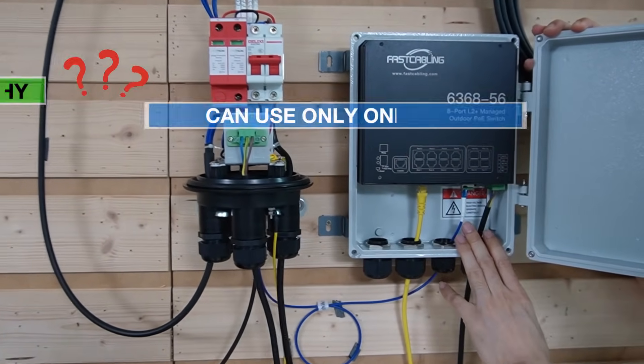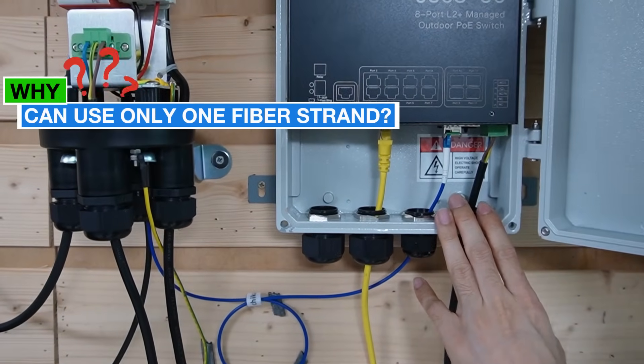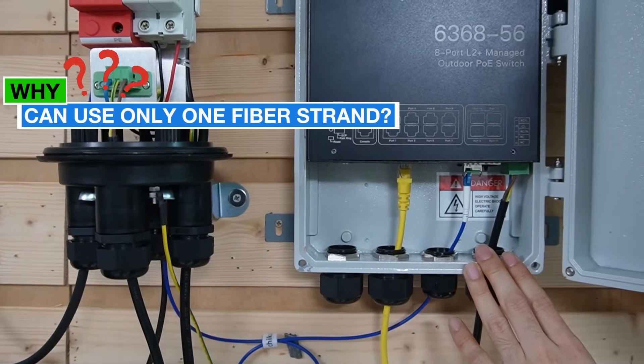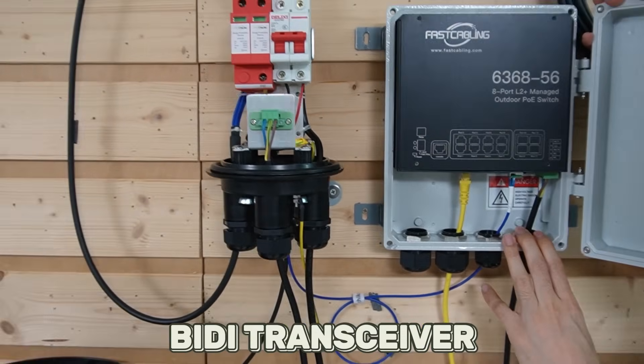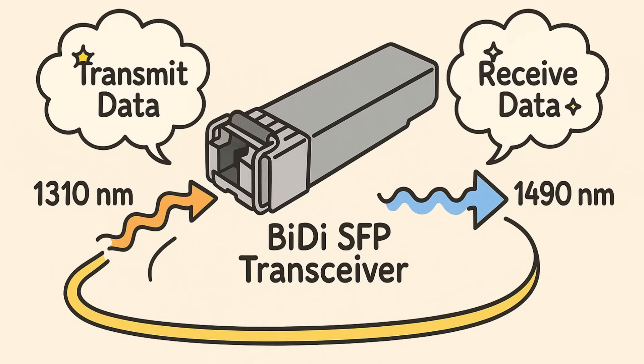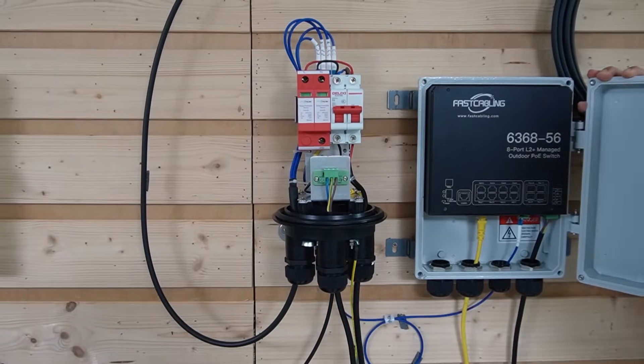You may wonder why we can use just one fiber optic strand to establish the network connection to the core switch. This is a BiDi transceiver, which uses different wavelengths to transmit and receive data. One fiber optic strand is enough.